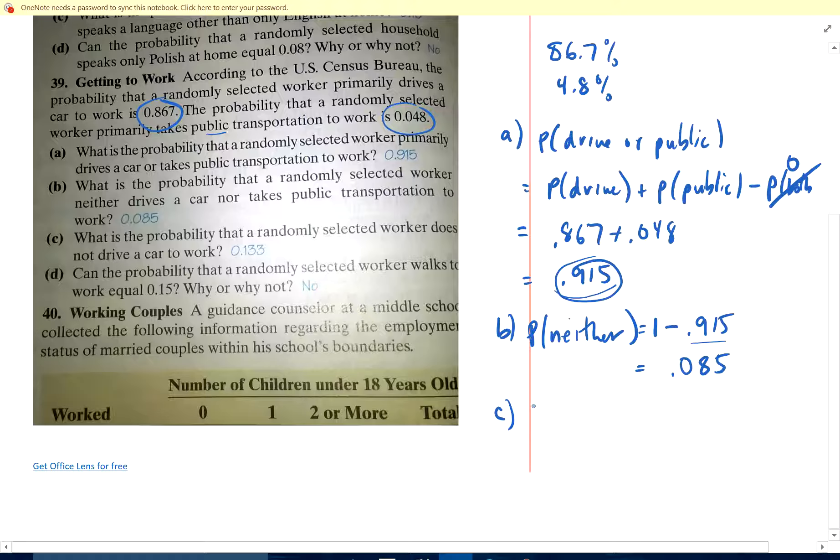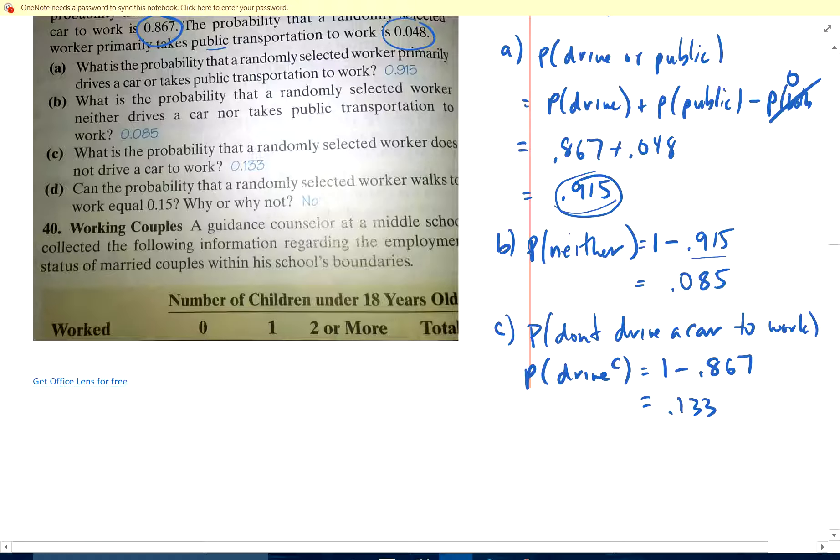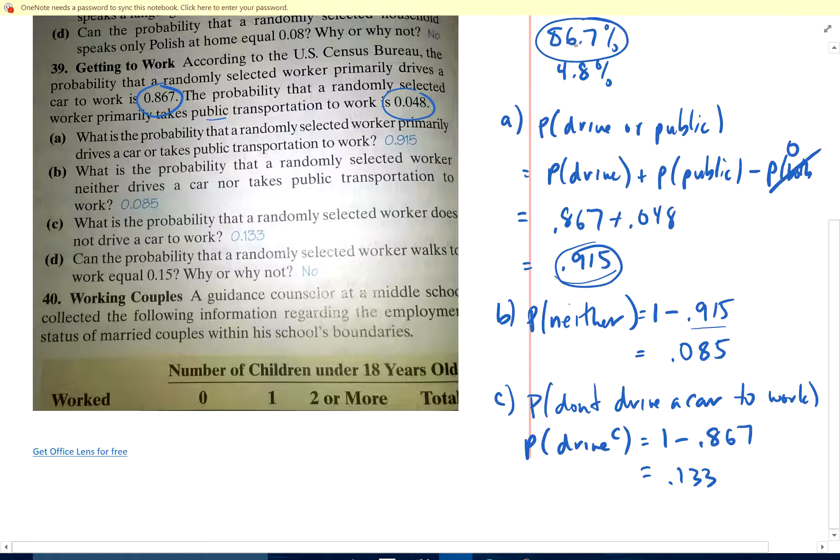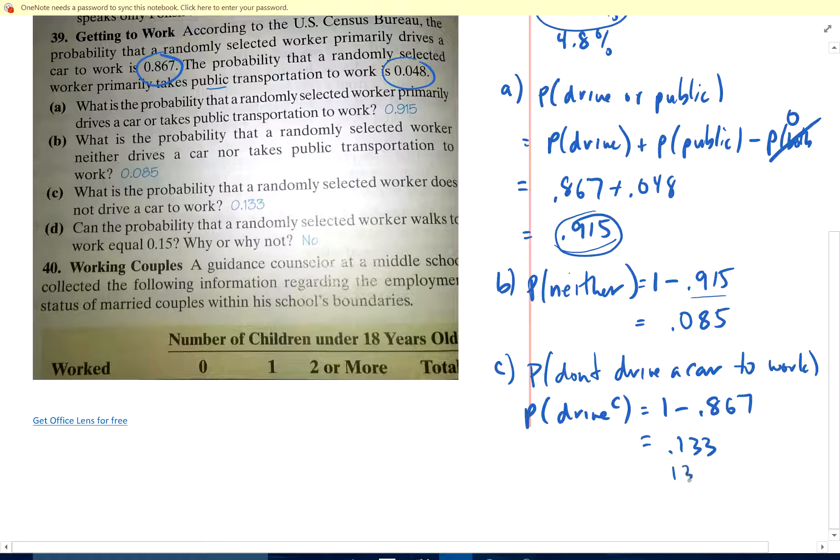Let's see. What's the probability that a randomly selected worker does not drive a car to work? Probability that they don't drive a car to work. Well, that's the probability drive complement, which is 1 minus 0.867, which is 13.3%. Because if you drive a car to work, it's 86.7%. If you don't, it's 1 minus 86.7%, which is 13.3%.